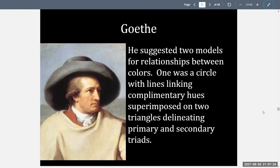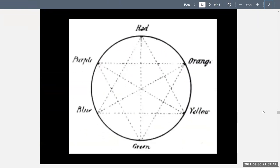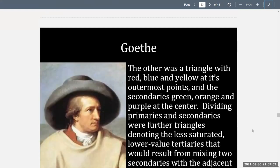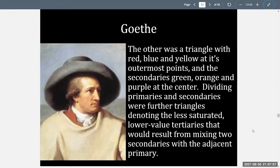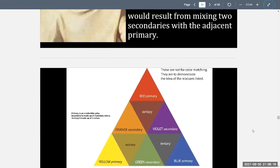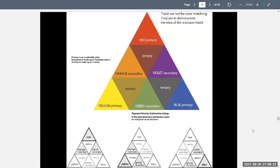The cobweb suggested two models for relationships between colors. One was a circle with lines linking complementary hues, superimposed on two triangles delineating primary and secondary triads — complements are linked together with two imposed triangles creating triads. The other was a triangle with red, blue, and yellow at its outermost points, and the secondaries of green, orange, and purple at the center. Dividing primaries and secondaries were further triangles denoting the less saturated, lower-value tertiaries that result from mixing two secondaries with the adjacent primary.